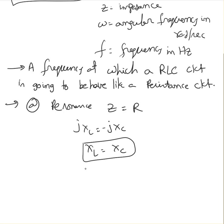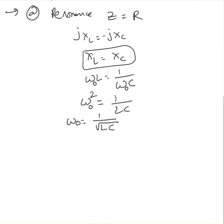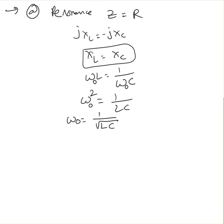XL is nothing but omega·L, and XC is nothing but 1 over omega·C. Setting them equal gives omega squared equals 1 over LC. So the resonant angular frequency, which we call omega naught, equals 1 over the square root of LC. When it comes to frequency F naught, it is 1 over 2·pi times the square root of LC.